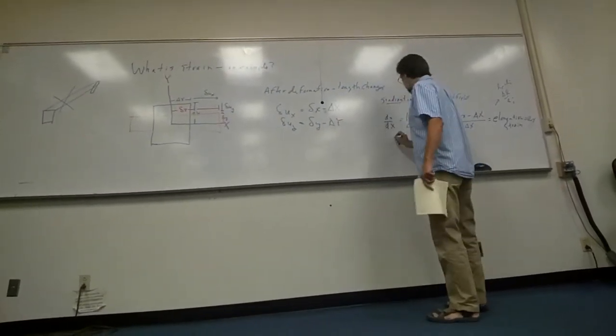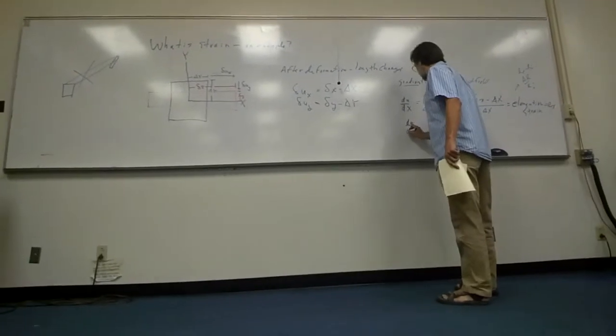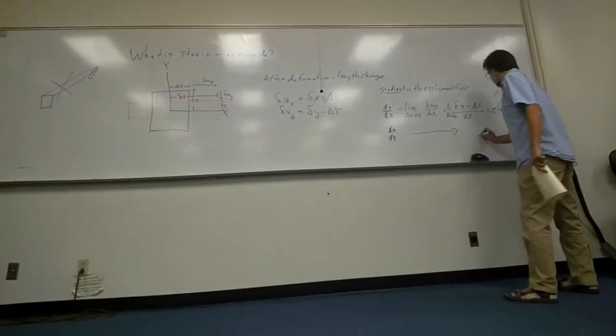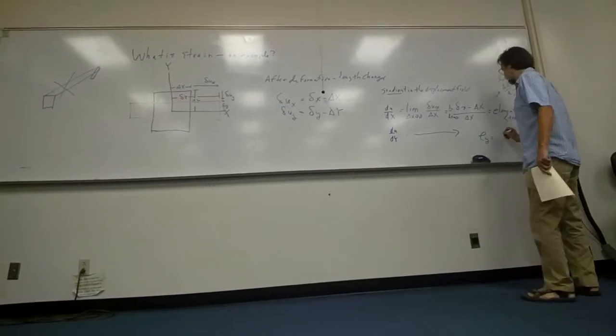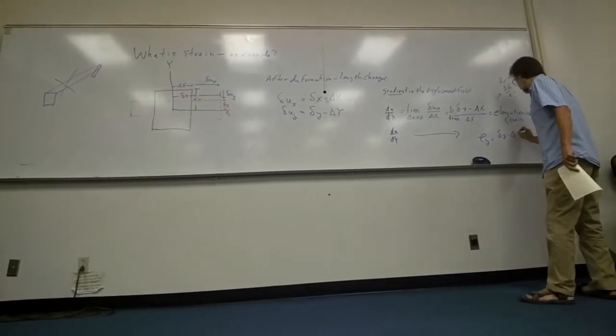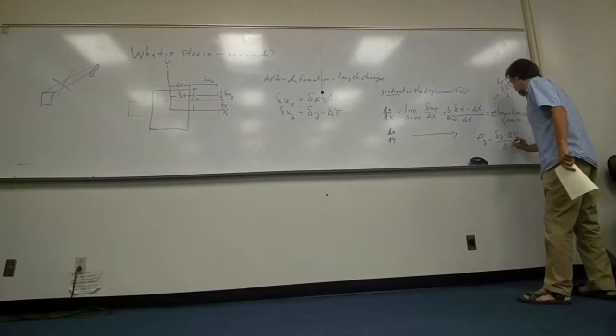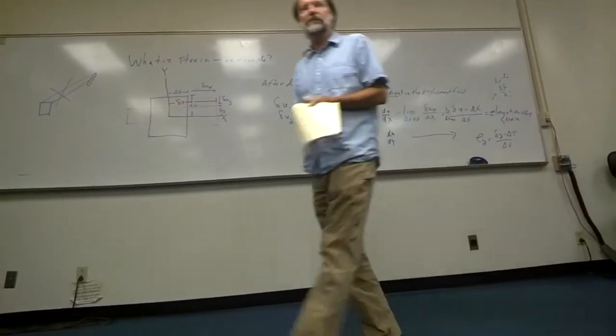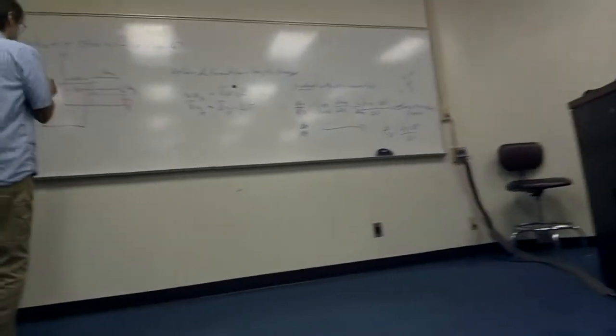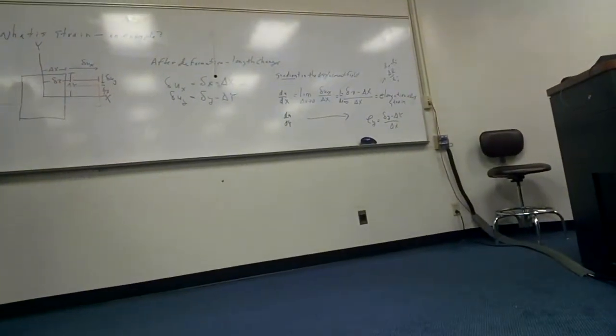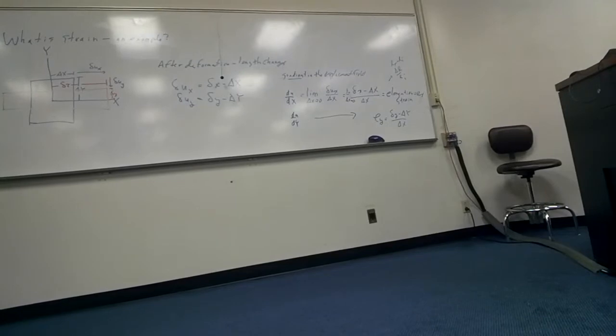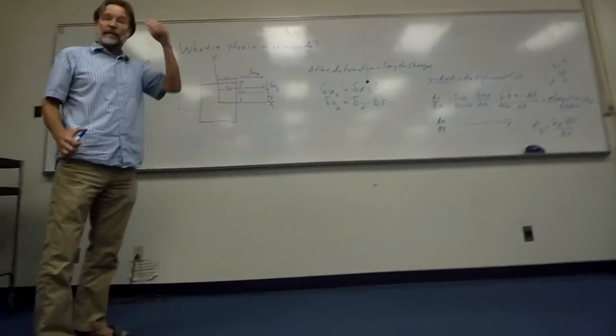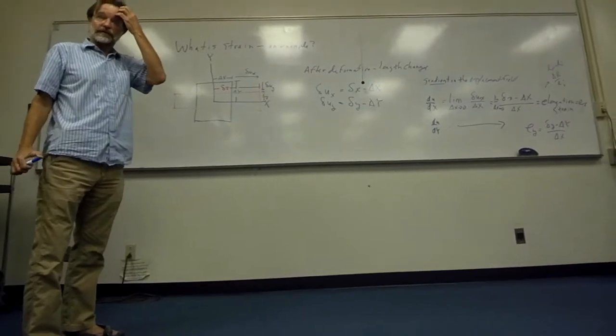Similarly, you could do the same thing. There's also a du/dy. I'm going to go through all the same thing. But there's an e in the y-direction, which is little delta y minus big delta y, divided by big delta y. Because that goes to zero, that's the other quantity, the other elongation. In this quantity, in this problem, the way it's set up, right? Now, that's one measure of the elongation strain.